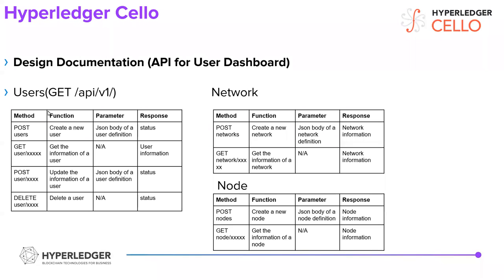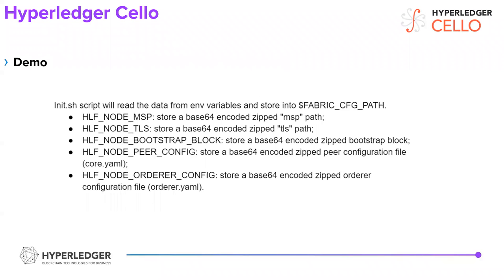So this is some information where we use HTTP methods. The URL will start from like API version one, with add-ons like network and a network ID. There will be the users — if you call this API, it will invoke certain functionalities. And I have a quick demo to show.